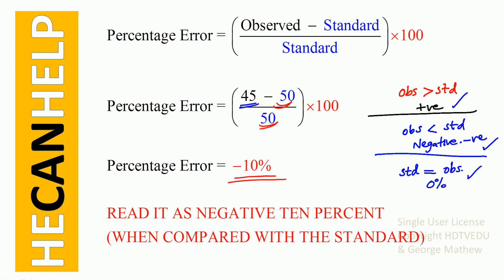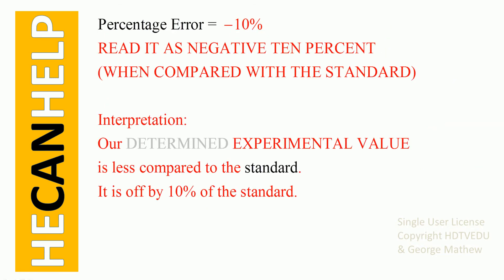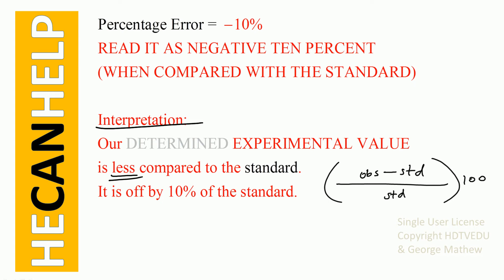Read it as negative 10% when compared with the standard. The interpretation is that our determined experimental value is less. Whenever the observed value of 45 is less than the standard of 50, the result of 45 minus 50 is negative 5. Our experimental value is less compared to the standard — it is off by 10%.